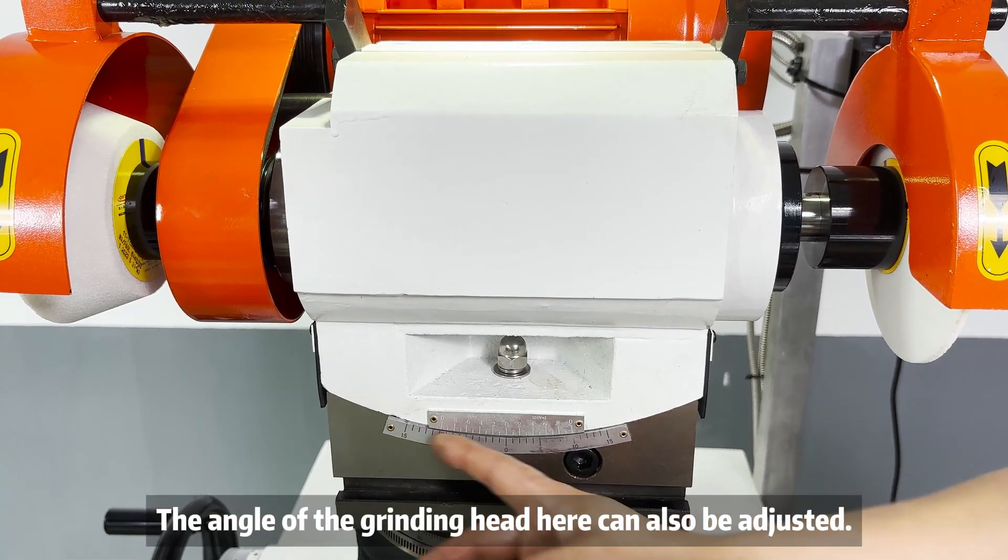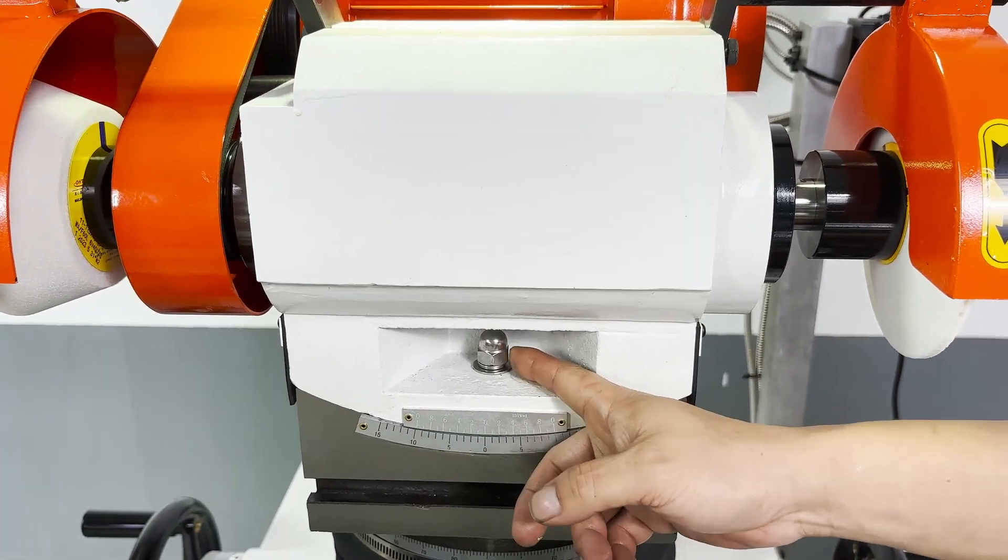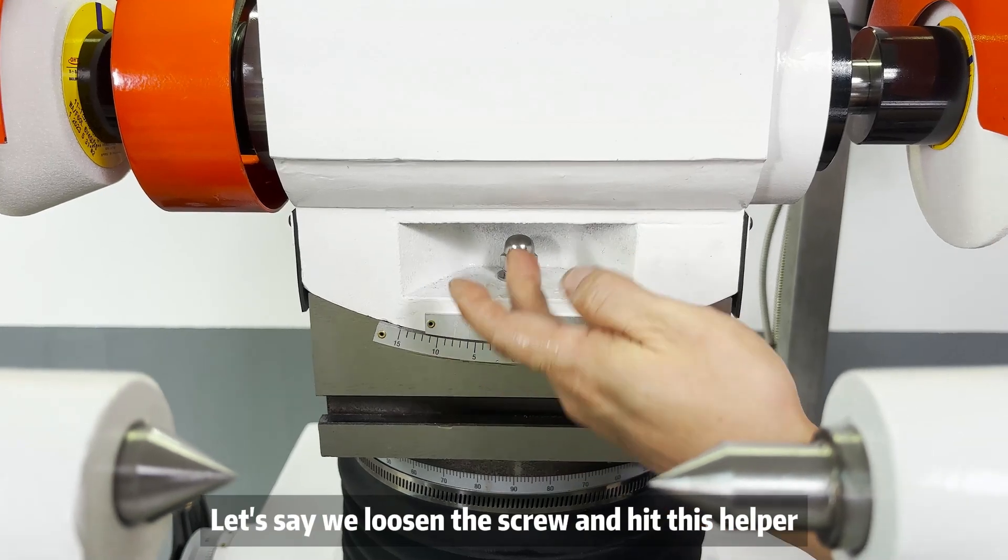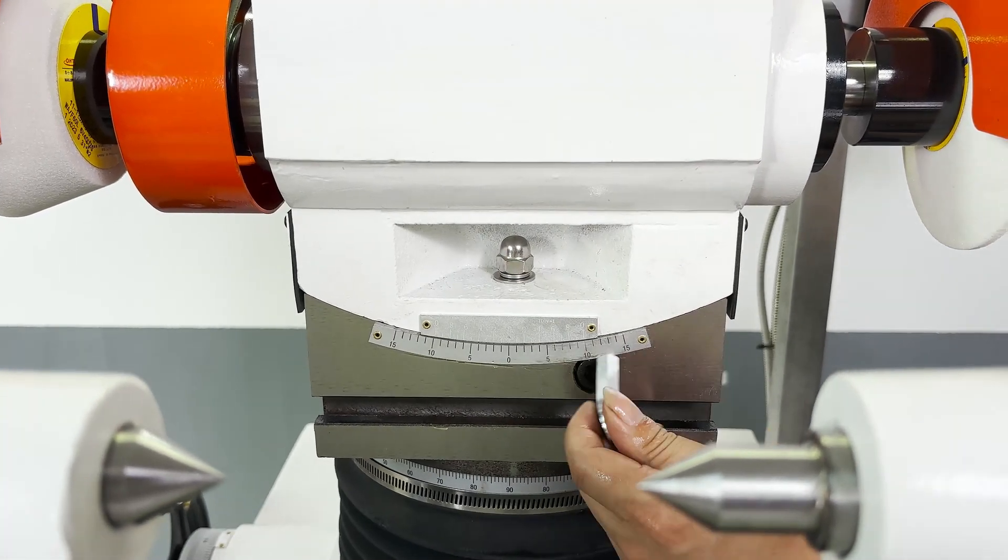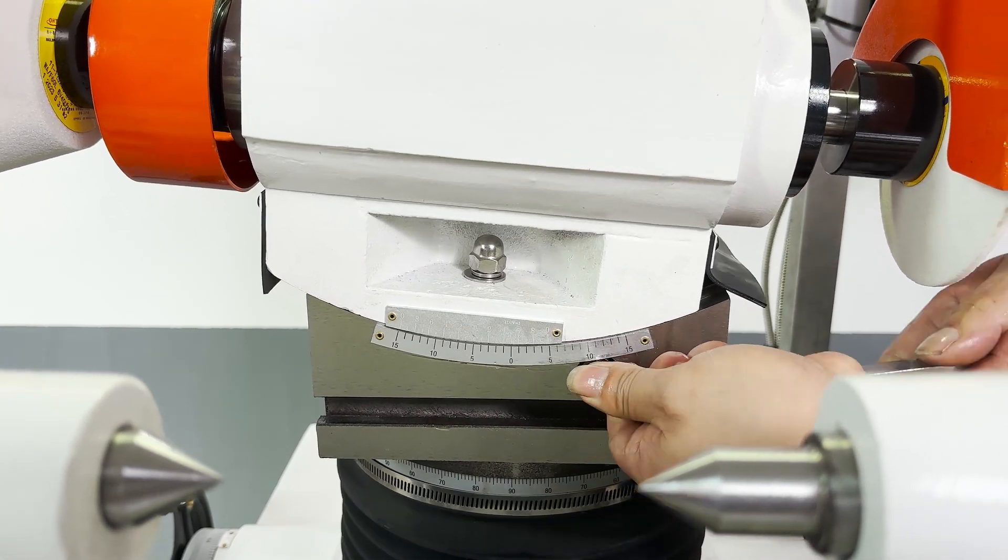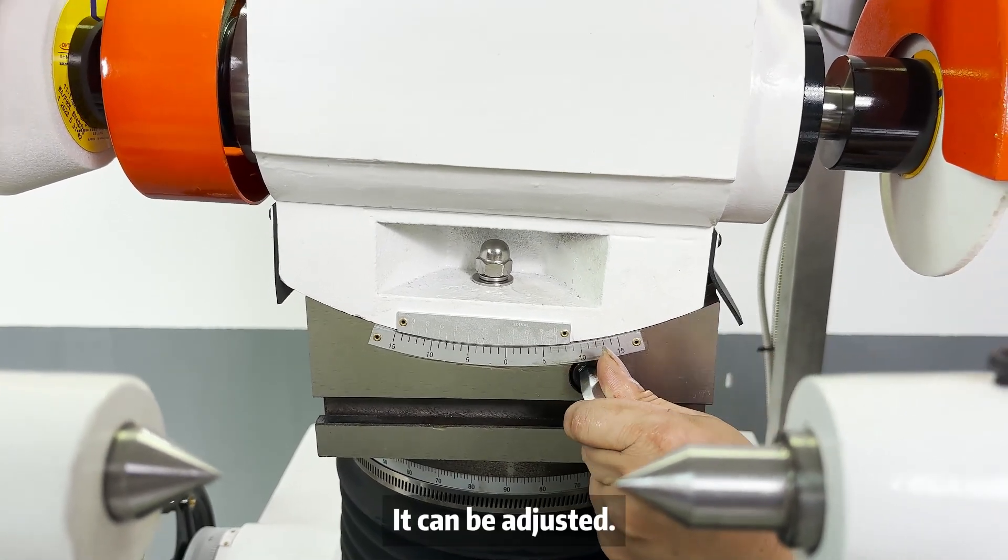The angle of the grinding head here can also be adjusted. Loosen this screw. Let's say we loosen the screw and hit this helper. You can use this wrench, adjust clockwise or counterclockwise. It can be adjusted.